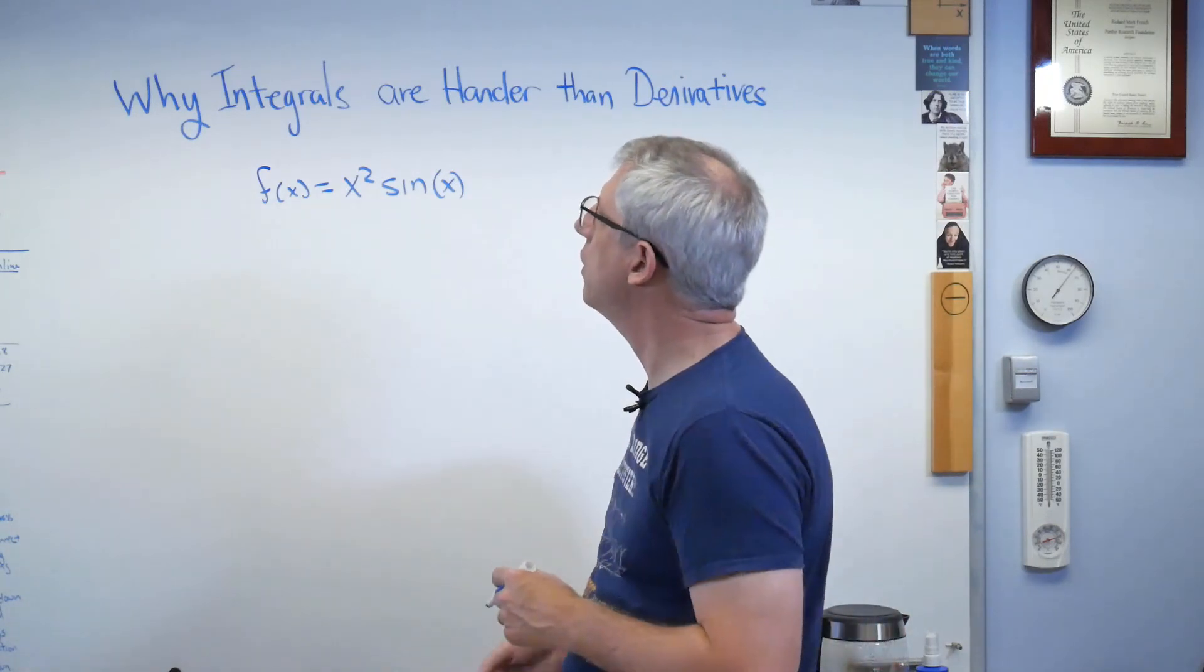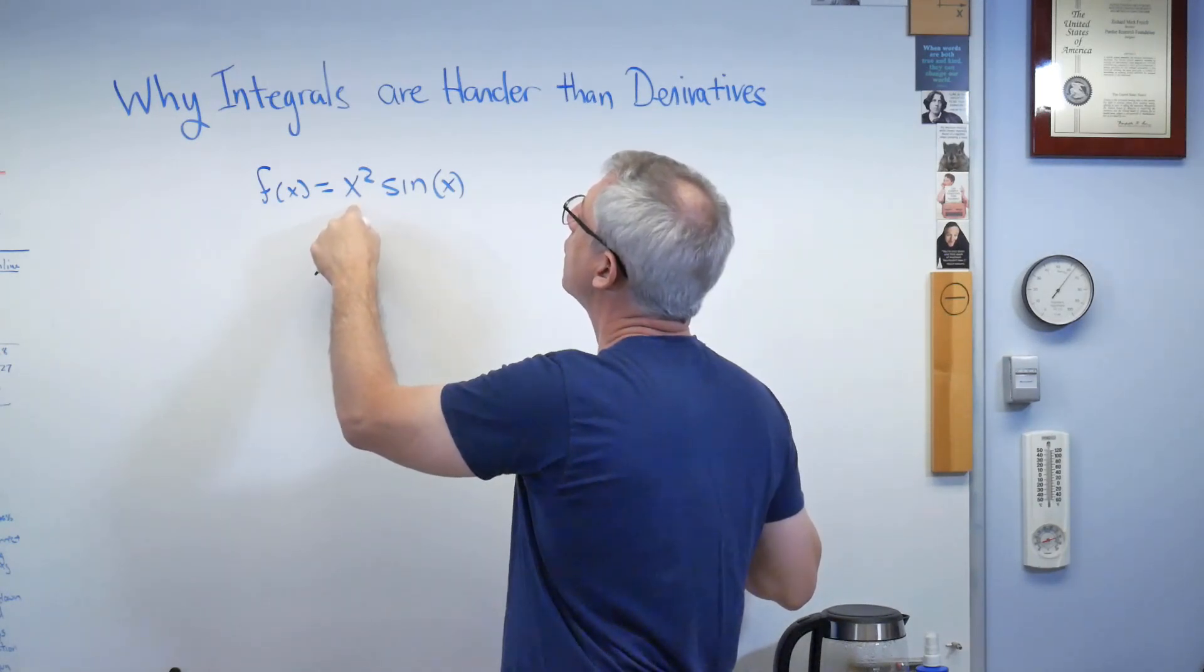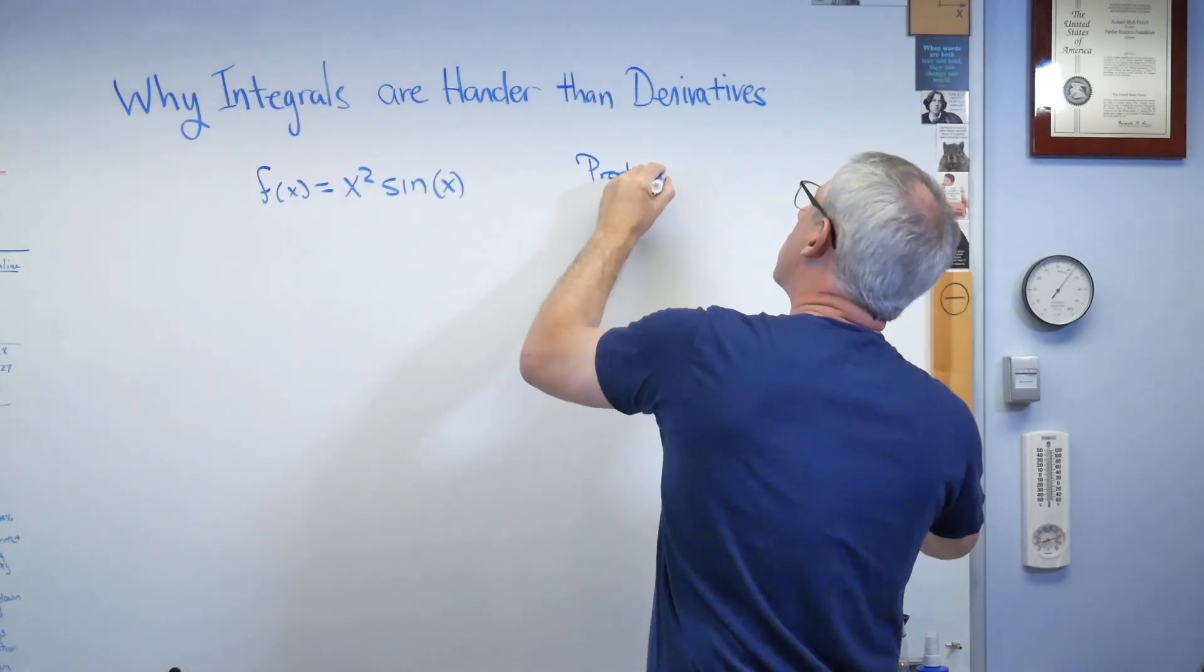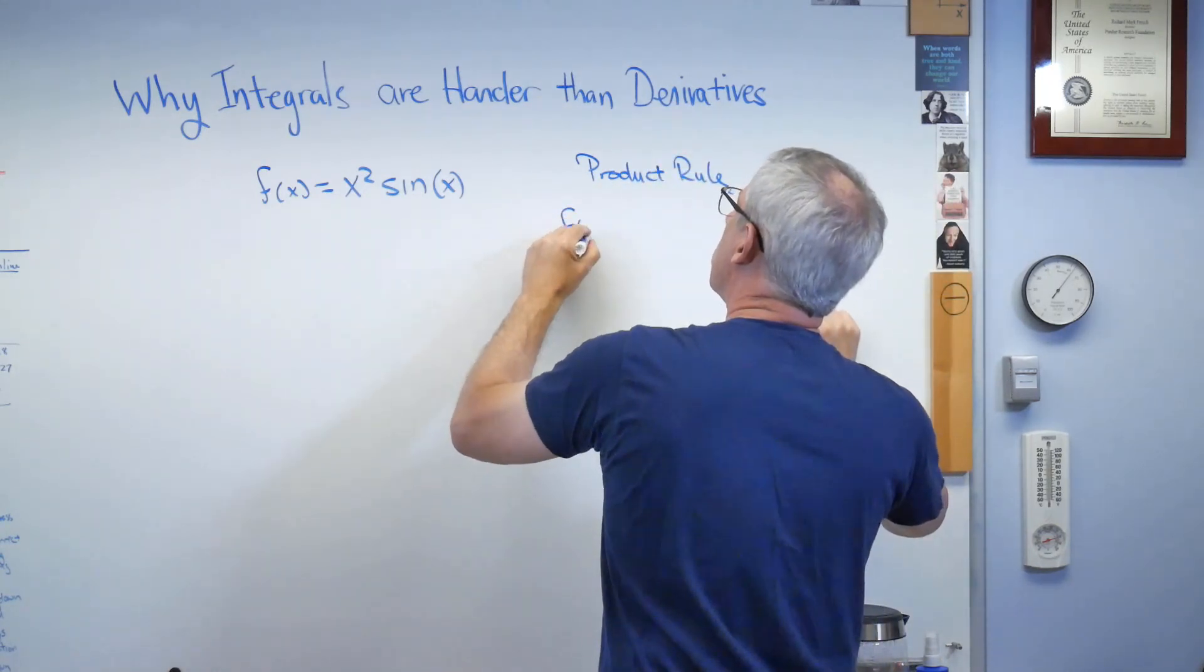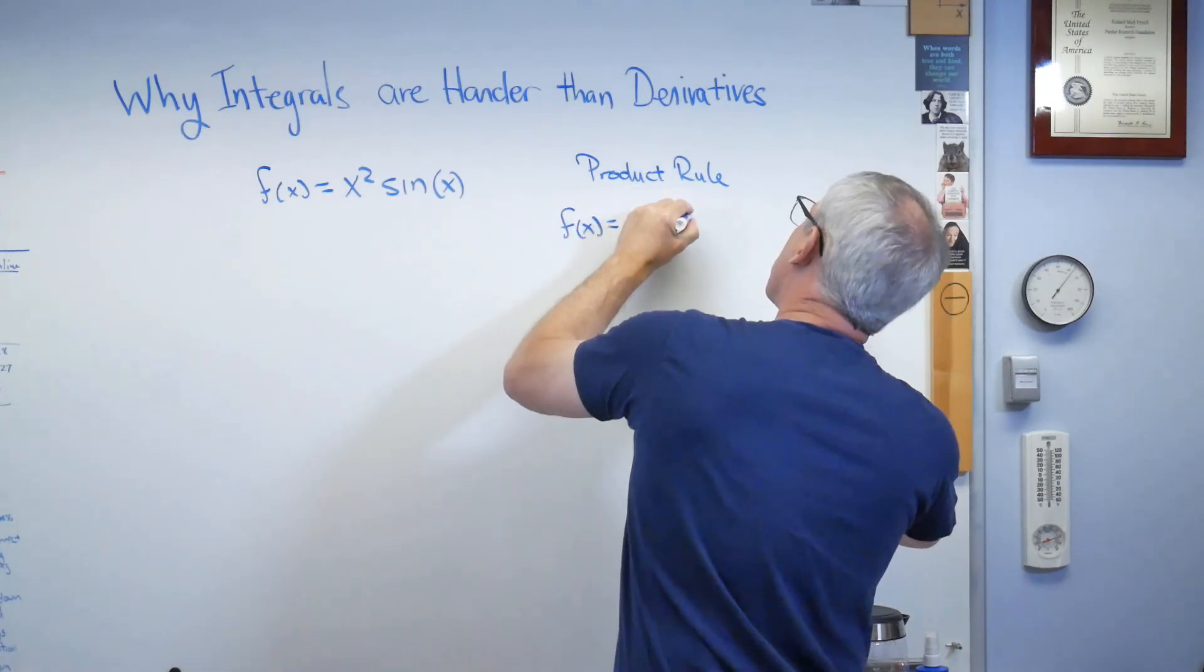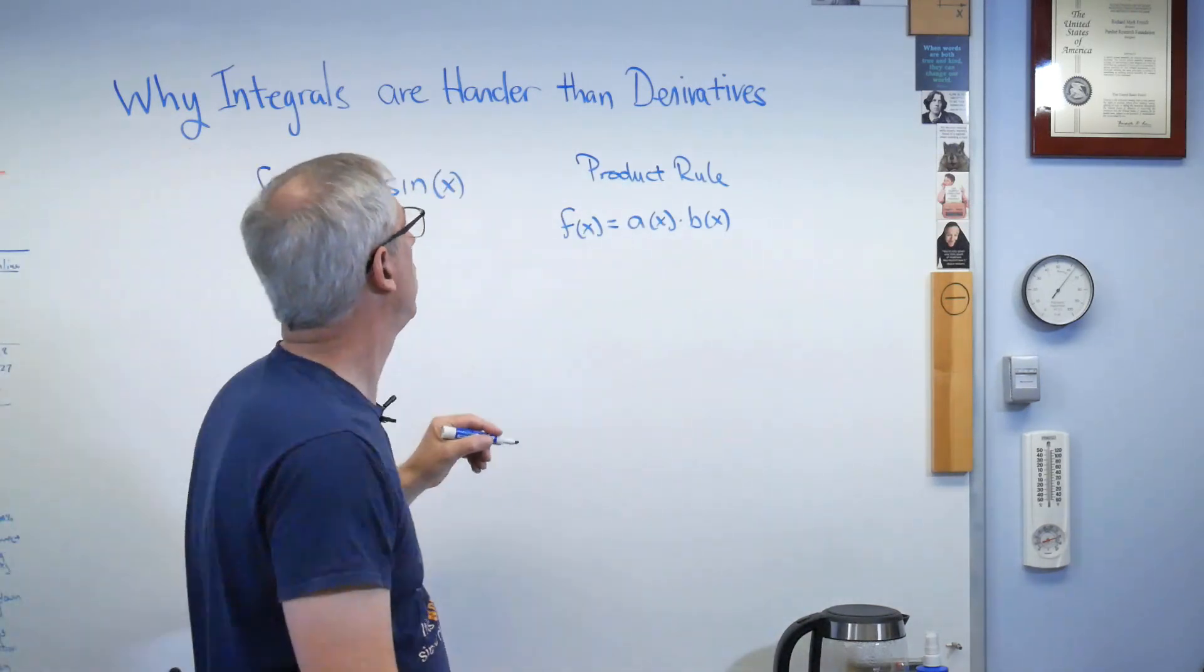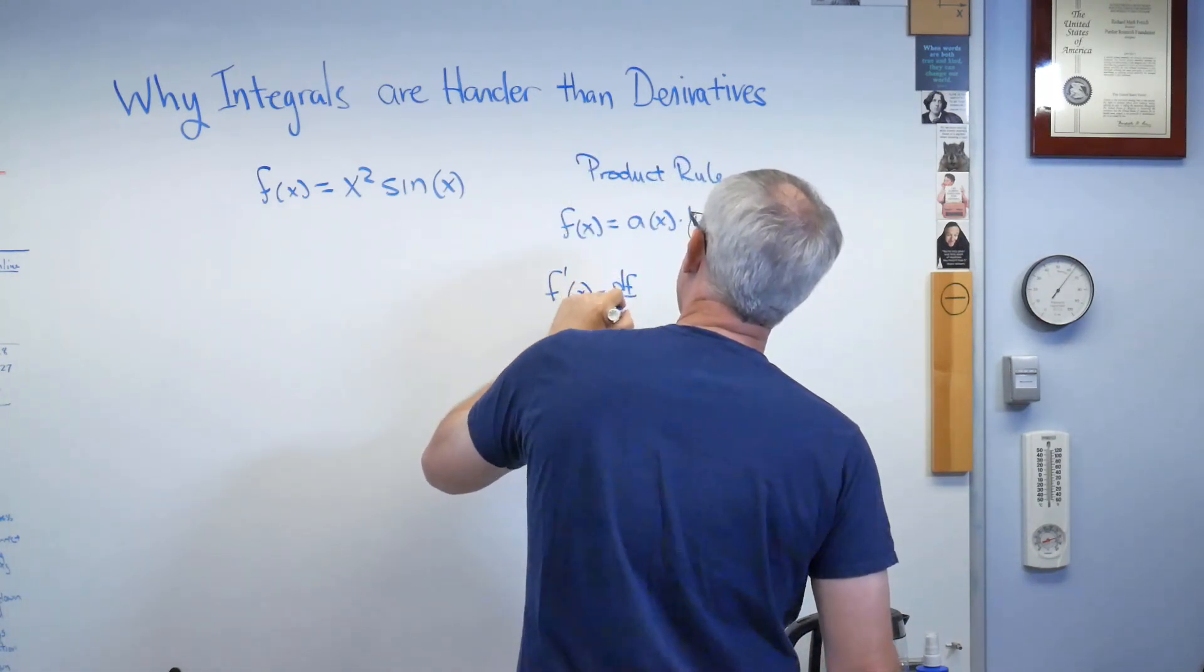So let's say we want to take a derivative of this. This is a function or a product of two functions, x squared times sin x. There's a rule for that. It's called the product rule. And somebody a long time ago, probably Newton or Leibniz, realized that if I have a function that's the product of two other functions like this is, then f prime of x, and I will get my head out of your way. I'm not always very good about that.